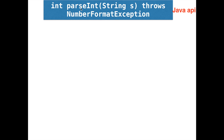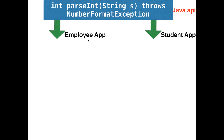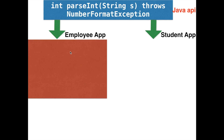Let's say two different people want to use parseInt in their applications. One guy is creating an app called Employee App, and another is creating an app called Student App. The first developer has a class for his Employee App and inside it a method called void login — he wants to build the login feature. This login method is specific to the Employee App.